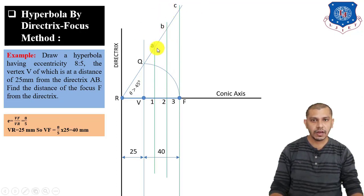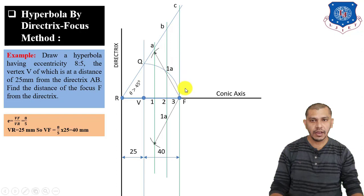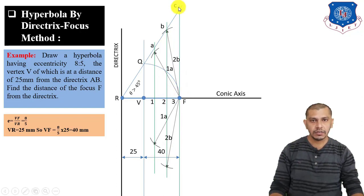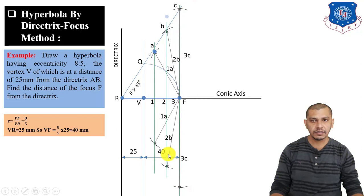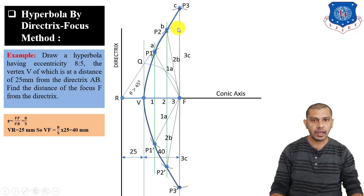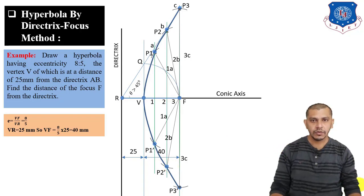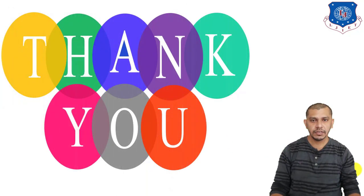Measure arc length 1A and from F as center give an arc on both sides. Measure arc length 2B and from F give an arc on both sides. Mark points P1, P2, P3 and P1', P2', P3'. Join these points with a freehand curve to get the hyperbola using the directrix and focus method. The method for drawing the normal and tangent remains the same as discussed in the ellipse and parabola. That's all for today — thank you for watching, see you in the next lecture.